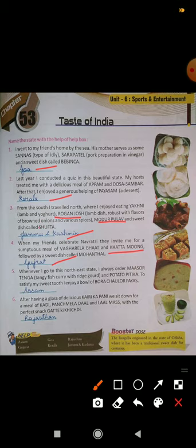Number five is Masoor Tenga, Aloo Pitika, and Bora Chaulor Pais from Assam. This is too typical to pronounce. Number six is Kadhi, Panch Mela Dal, Laal Maas, and Gatte ki Khichdi — that is from Rajasthan.